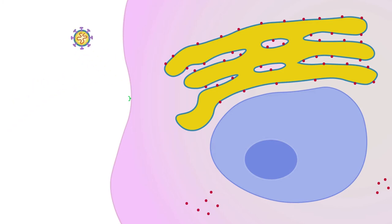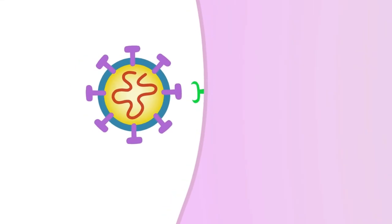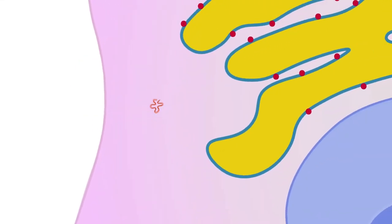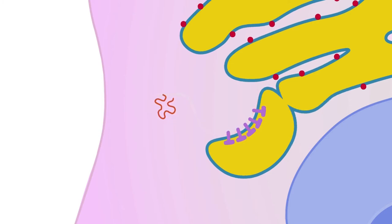Cells have locks that prevent viruses from entering them. But the coronavirus spikes act as keys, which allow the virus to enter certain cells in the body. Once in the cells, the virus forces the cell's machinery to use the virus's instructions to produce more viruses.